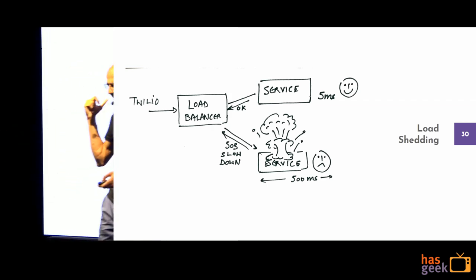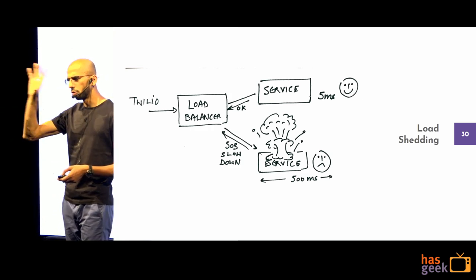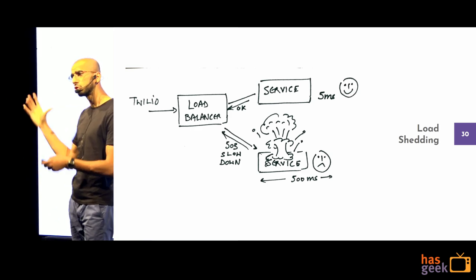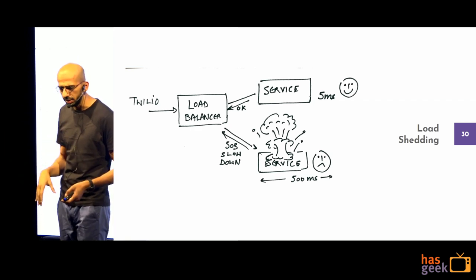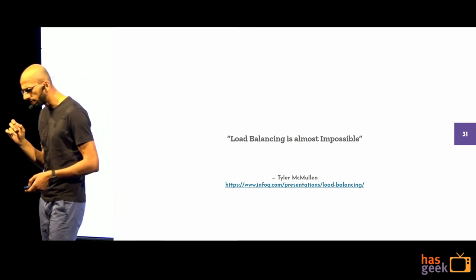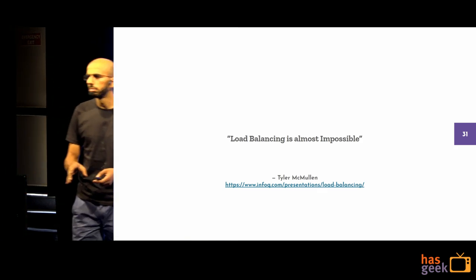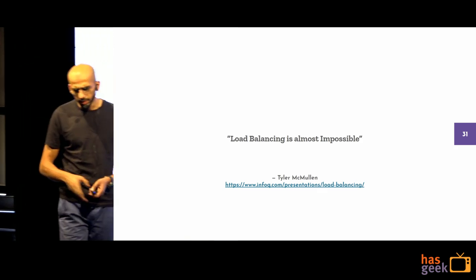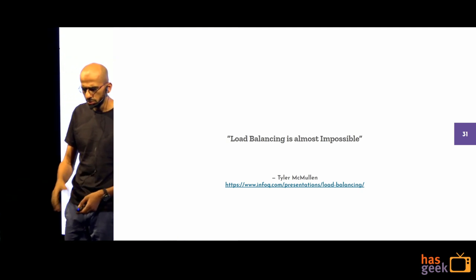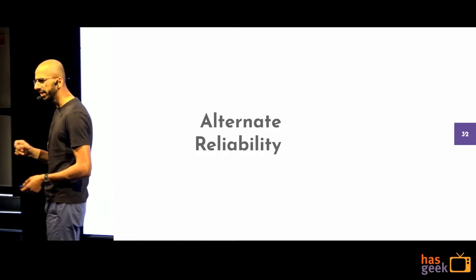Going back to the full picture: Twilio comes in, hits a load balancer, which hits your service. All of this complexity is what's going on under the hood — and all of it can fail. The CTO of Fastly says load balancing is almost impossible. The suggestion: take what's available, invest in good monitoring, and don't over-engineer it.